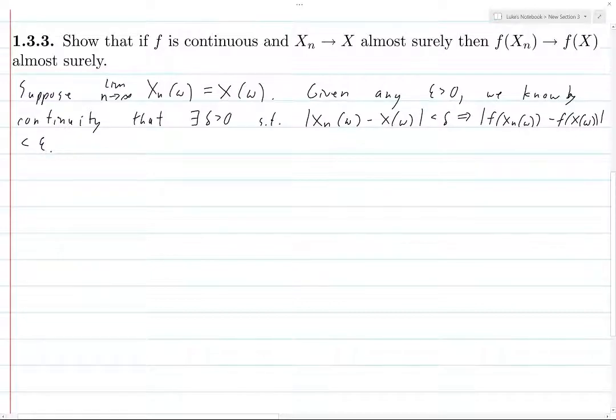This just comes from the definition of continuity. Usually we do this like if the distance between x and y is less than delta, then the distance between f of x and f of y is less than epsilon. But here we're using x_n omega and x omega in place of x and y in the general definition. Okay, so we know that this holds.